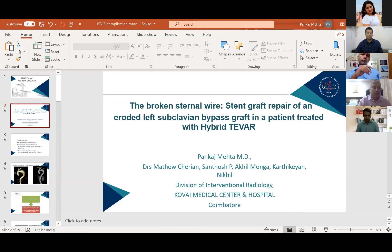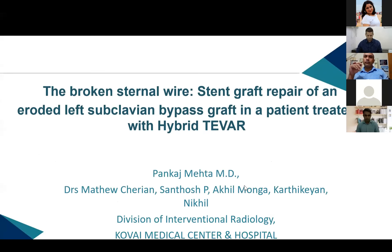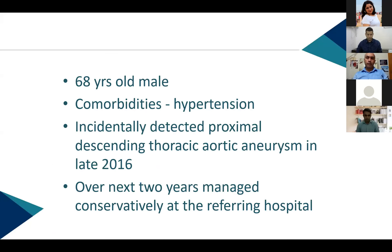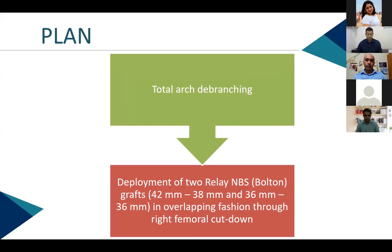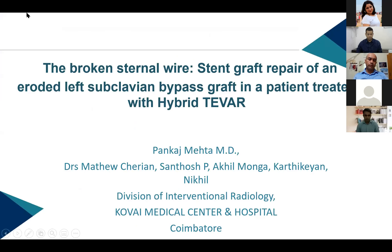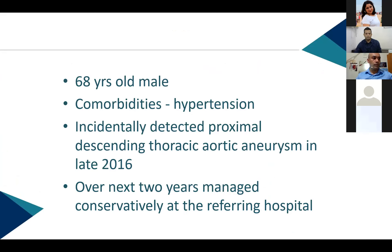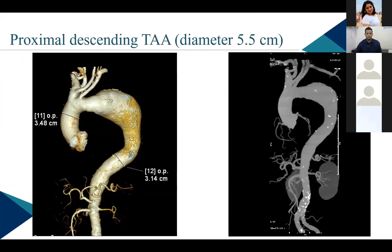Next case by Dr. Pankaj Mehta: a 60-year-old male hypertensive with an incidentally detected proximal descending thoracic aneurysm, managed conservatively for two years before treatment. This was a close to type 3 aortic arch aneurysm. The plan was total debranching with two Relay NBS bolt-in grafts due to insufficient landing zone. After debranching, angiogram revealed the surgeon had also banded the aorta, changing measurements entirely — the prepared stent grafts were now too large for the area.